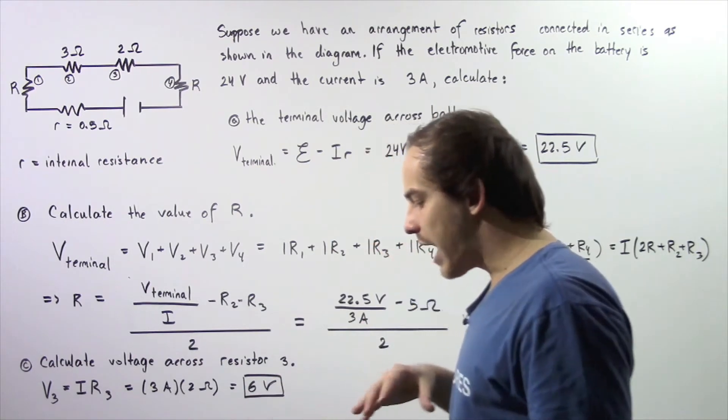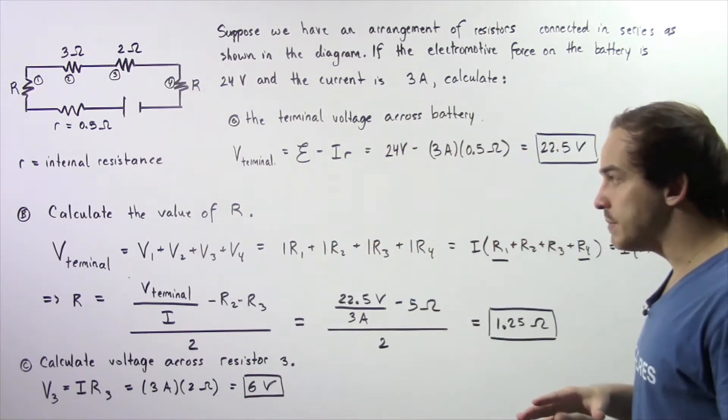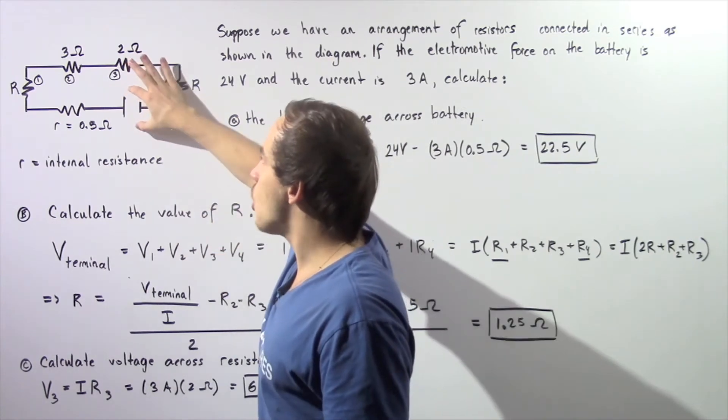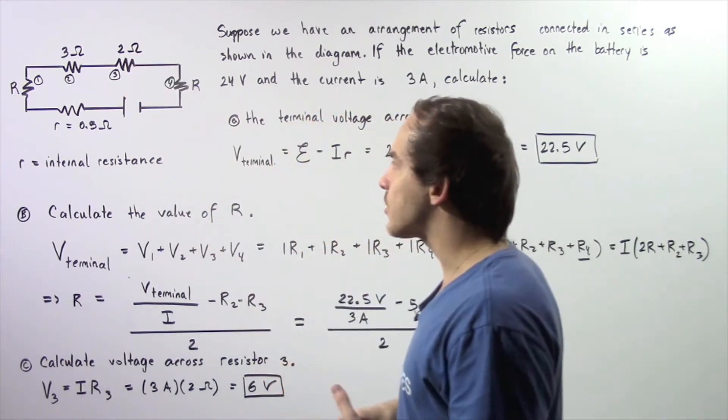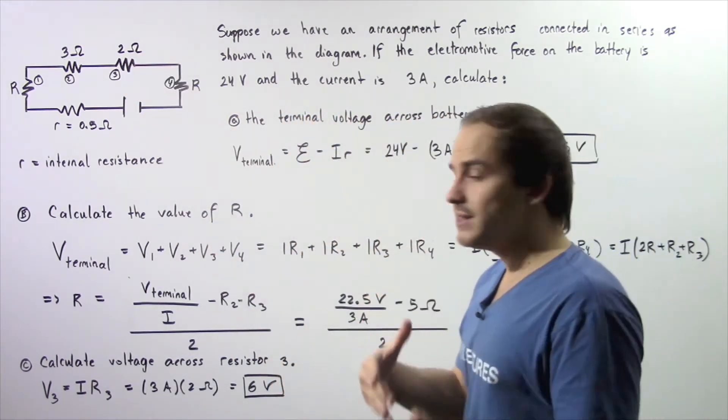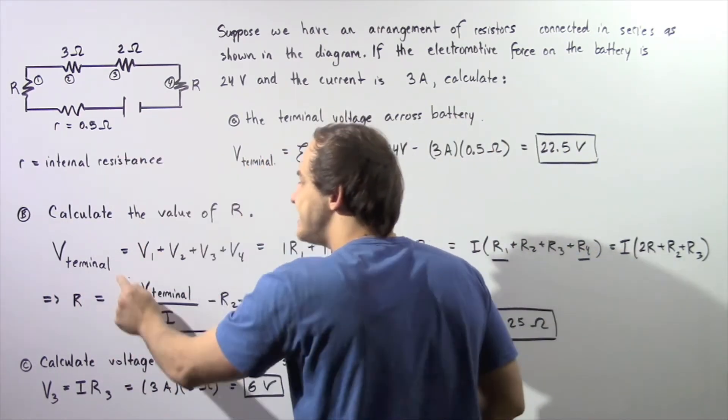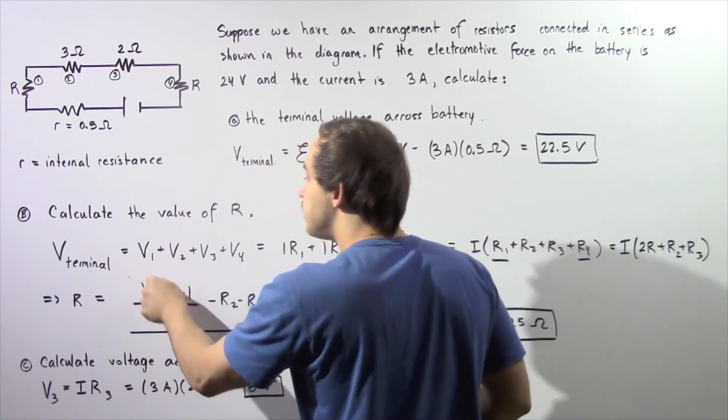So let's begin by recalling the relationship between the voltages across our resistors and the total voltage across our battery. So we spoke about this in the previous lecture.